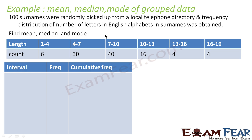100 surnames were randomly picked from a local telephone directory, and the frequency distribution of the number of letters in the English alphabet surnames was obtained. The surname lengths and their frequencies are: 1–4: 6, 4–7: 30, 7–10: 40, and so on. We have to find mean, median, and mode. Let's start with median.